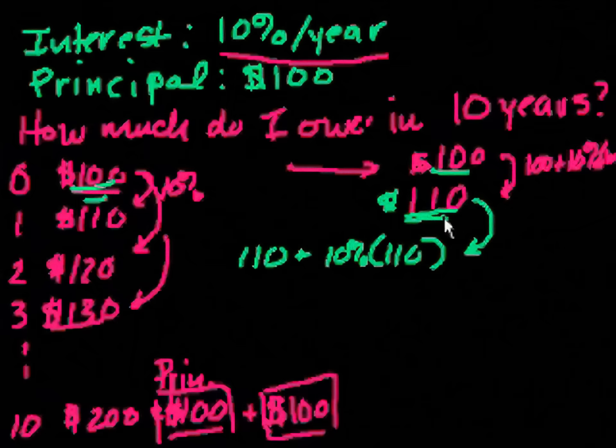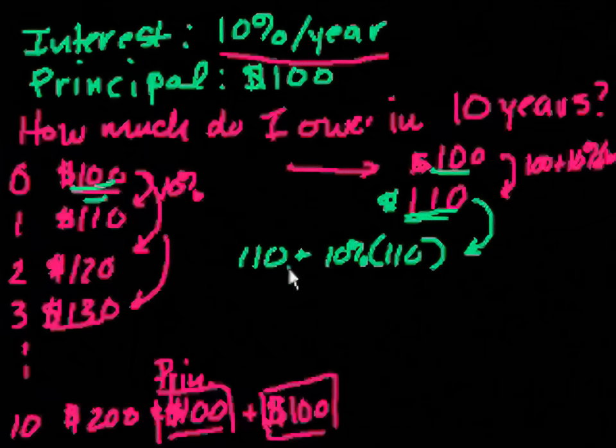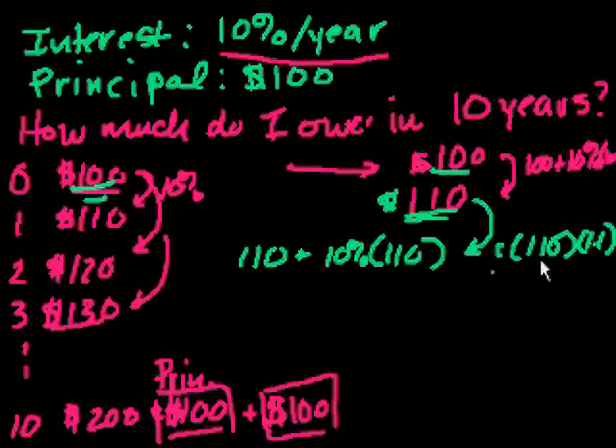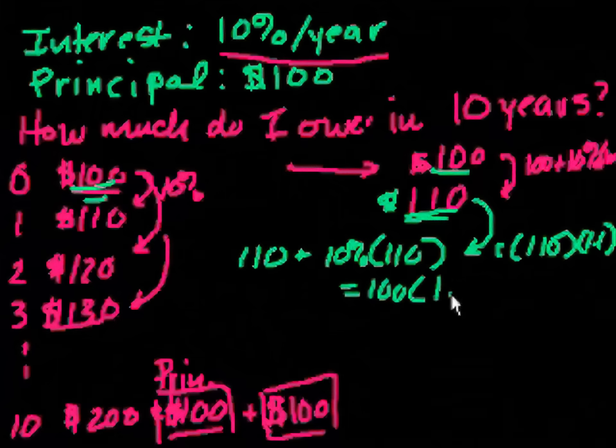And that is equal to, you could actually undistribute the 110 out, and that's equal to 110 times 1.1, right? And actually I could rewrite it this way too, I could rewrite it as 100 times 1.1 squared, and that equals $121.